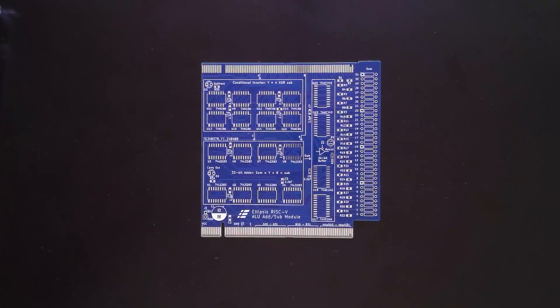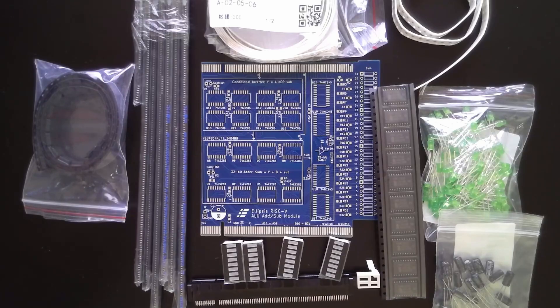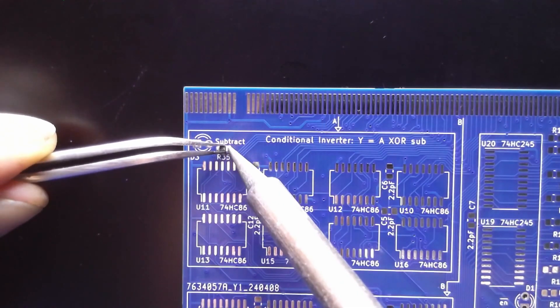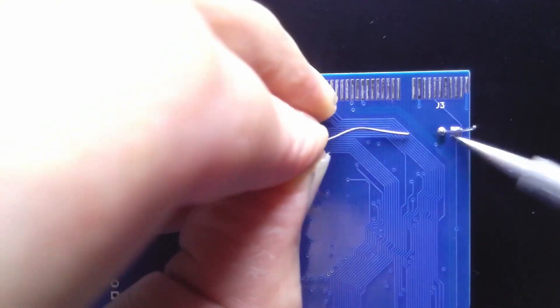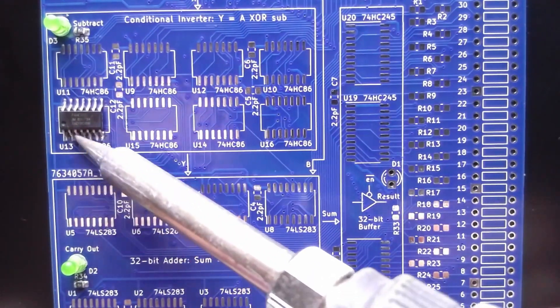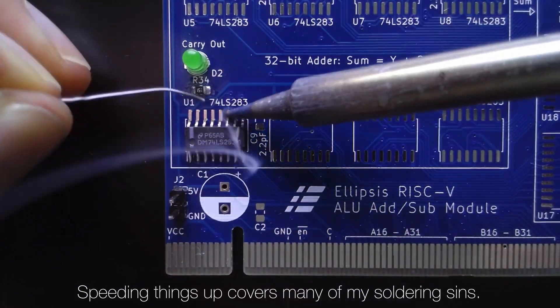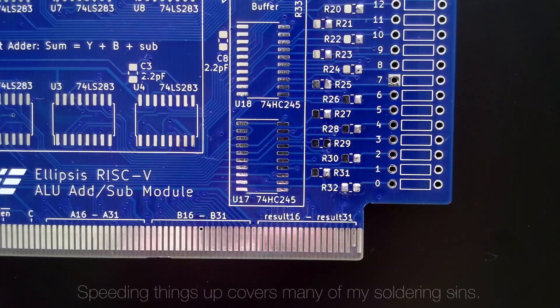The PCB has arrived along with all the components. So it's time to get soldering. Now I have to confess, my surface mount soldering skills are terrible. So please don't take anything you see as a guide on how to solder small components. In fact if you have any suggestions on how I can improve, by all means, let me know.